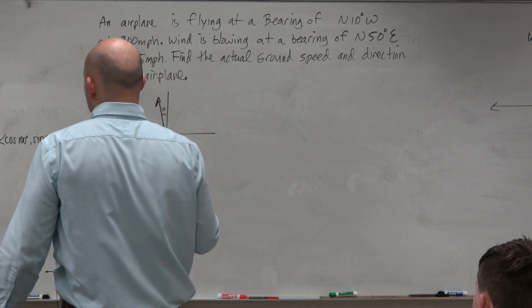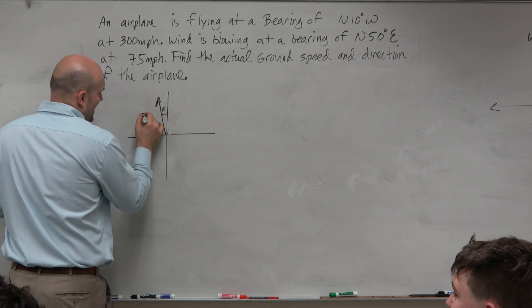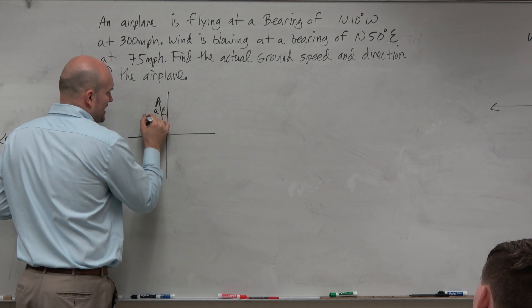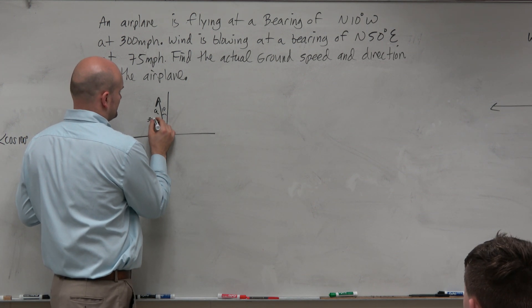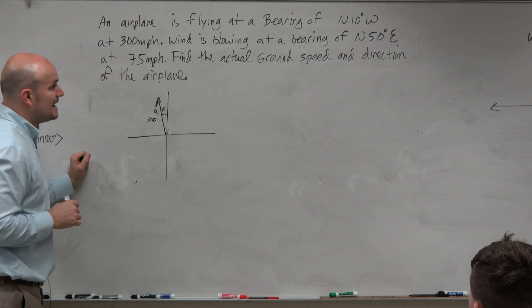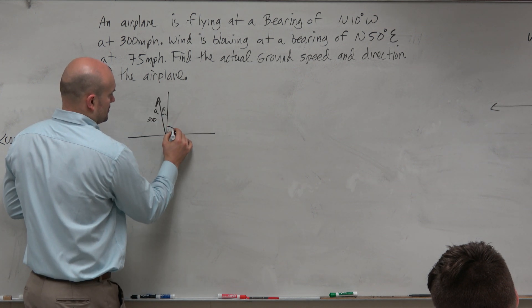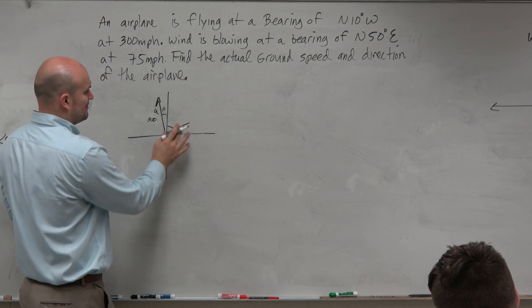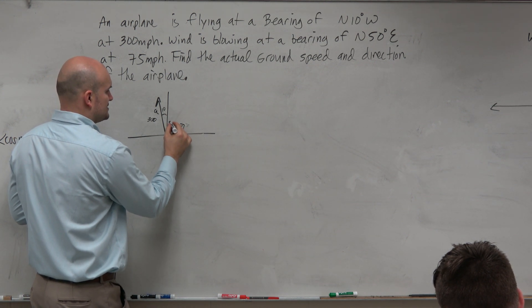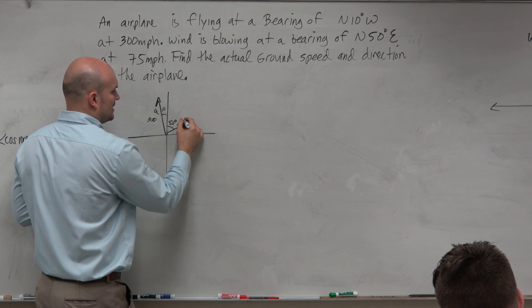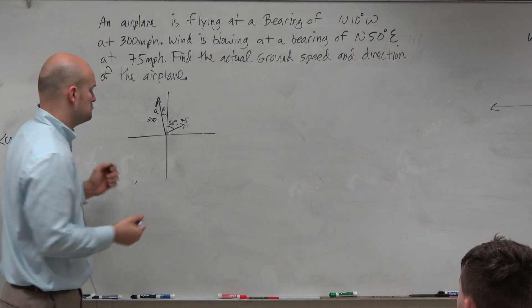Now we should give this a name. So what do you guys want to call this? A? That kind of sounds good, right? So we'll say A is our vector. And we can say the magnitude of this vector is 300. Now there's another vector that's going on, which is north 50 degrees east. But that one's not as big. That one's only going 75 miles per hour. So that's like right there. And so that's 50 degrees. We can say that's going to be 75 miles per hour. And then what should we call this one? W. W sound good?